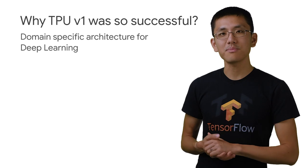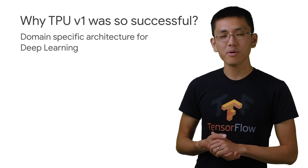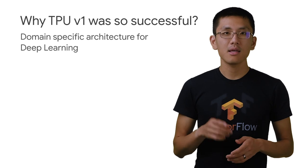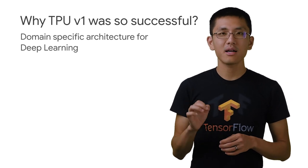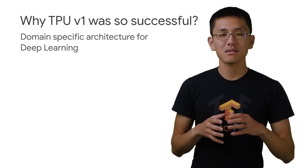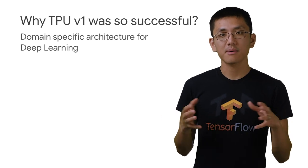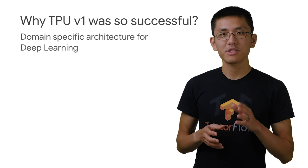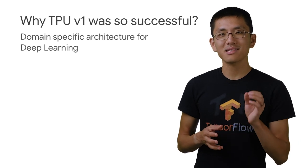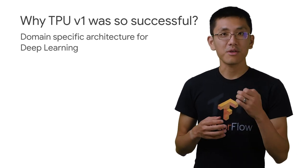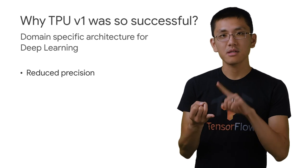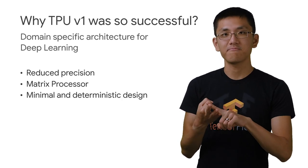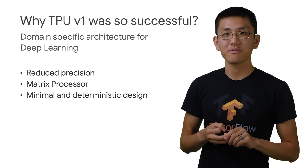Not only was the TPU v1 much more performant than the existing CPUs and GPUs of the time, it importantly had a much higher performance per watt of energy. These two effects combined to make the first TPU a very effective chip. The chip featured an architecture that was specific for deep learning — it utilized reduced precision, a matrix processor, and a minimal design to reduce overhead.